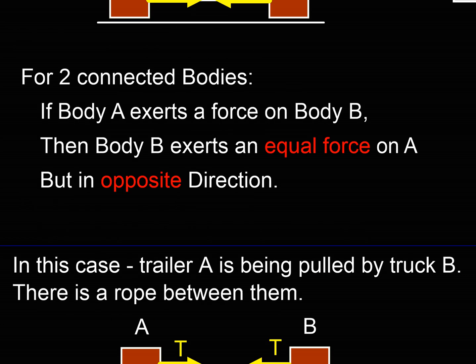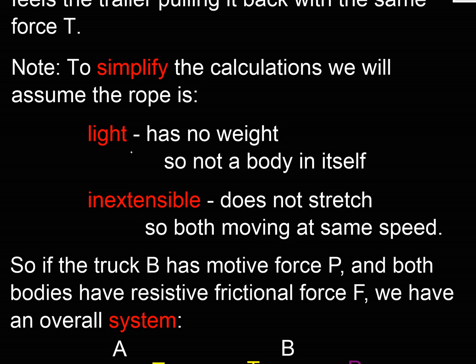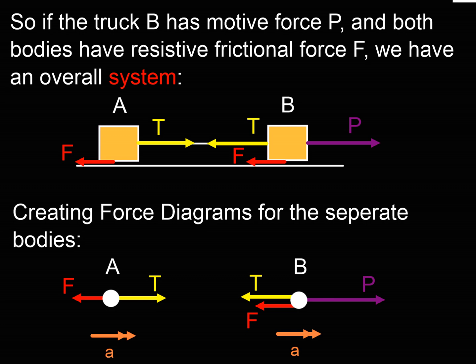In this example, a trailer A is being pulled by a truck B. The truck pulls in one direction, creating tension in the rope between them. When B moves to the right, A moves to the right at the same velocity. We need a few simplifications: the rope is light, so it has no weight; and it's inextensible, so it doesn't stretch — meaning body A and body B share the same speed, velocity, and acceleration.